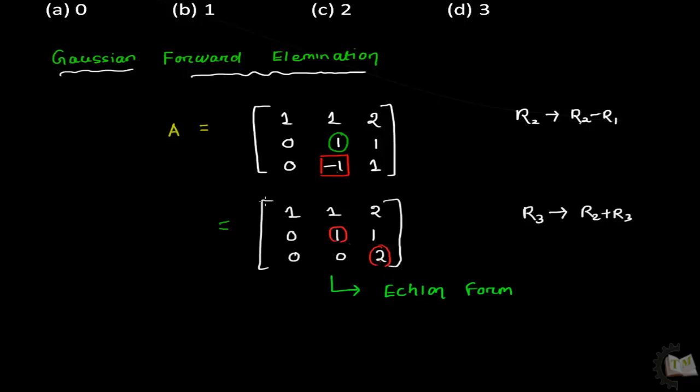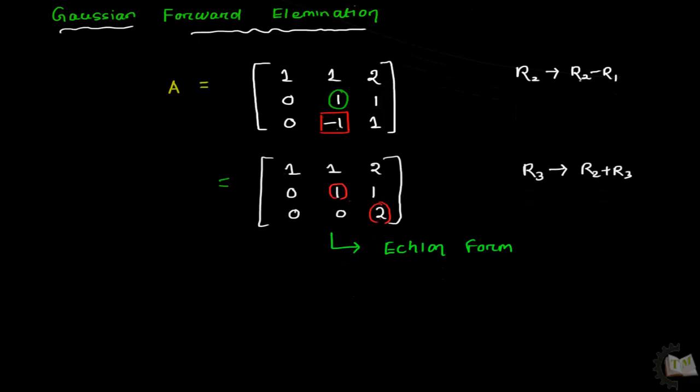Then how to calculate the rank by using the echelon form? According to Gauss forward elimination method, definition of rank is number of non-zero rows in echelon form of matrix.